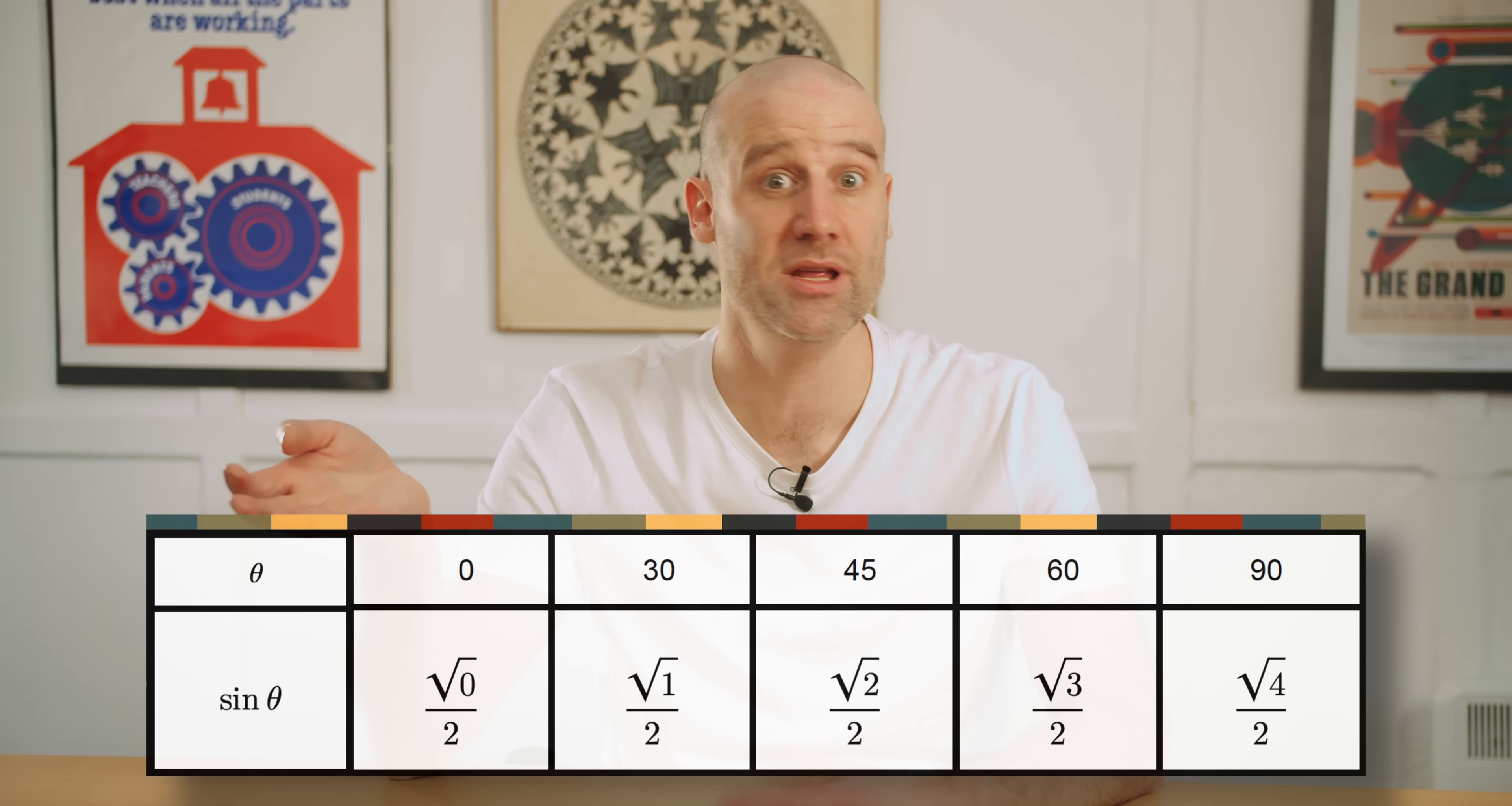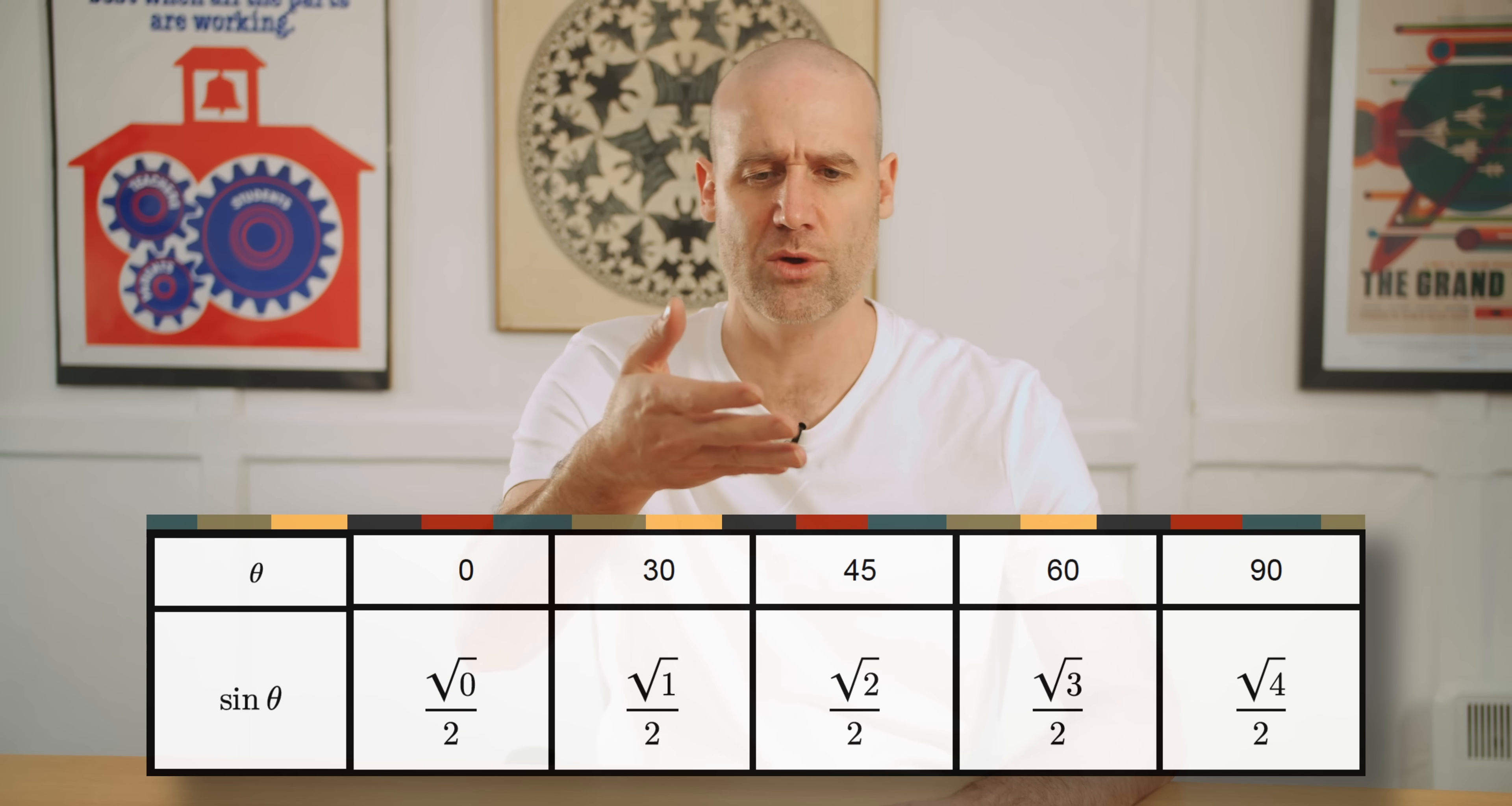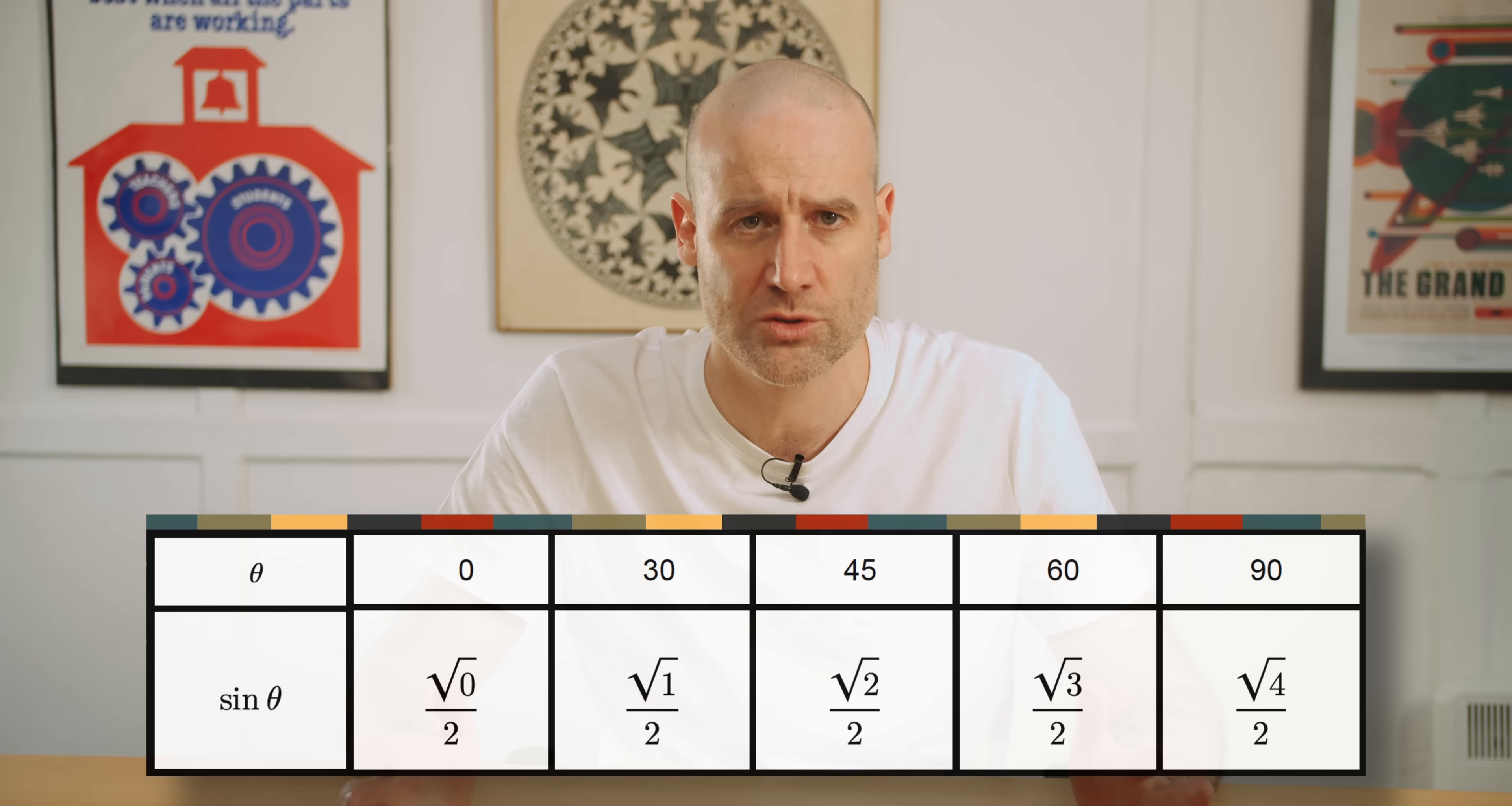We better get some pretty amazing insights into the patterns behind the values coming out of a sine function to justify this reckless obfuscating of the true values we all know and love. And sadly, we don't. Well, this sequence is ridiculous. For a start, you've got random jumps between the values. We go from 0 to 30, and then we only go up 15 to 45, and then 60 and 90. Well, what is up with that?